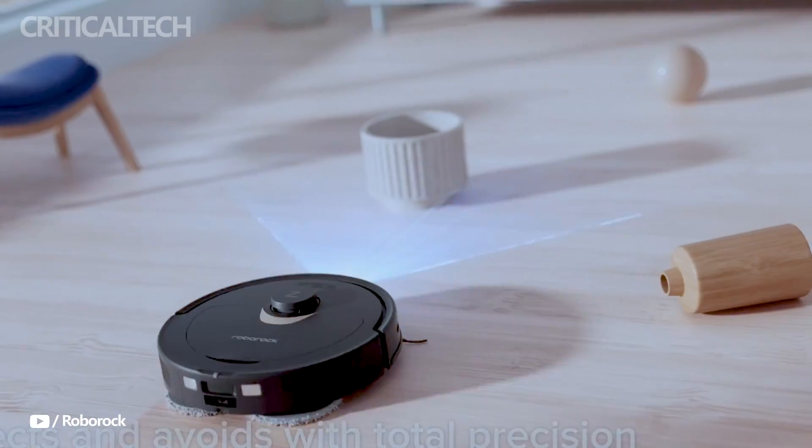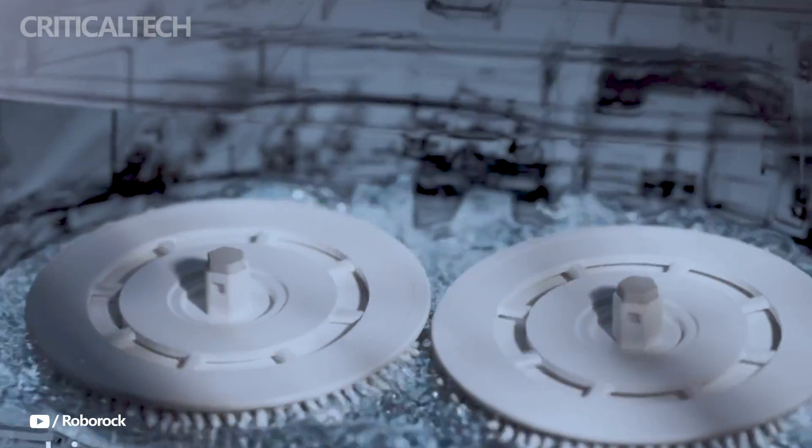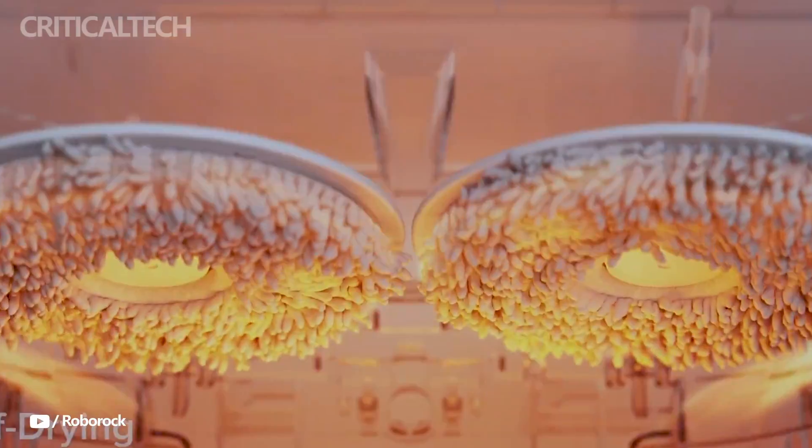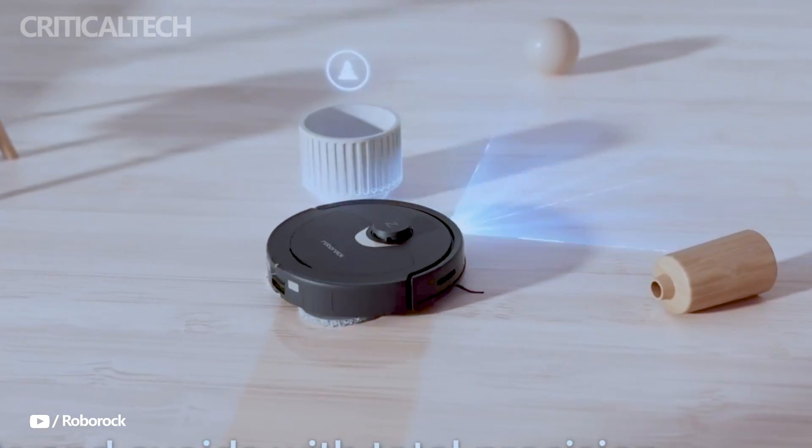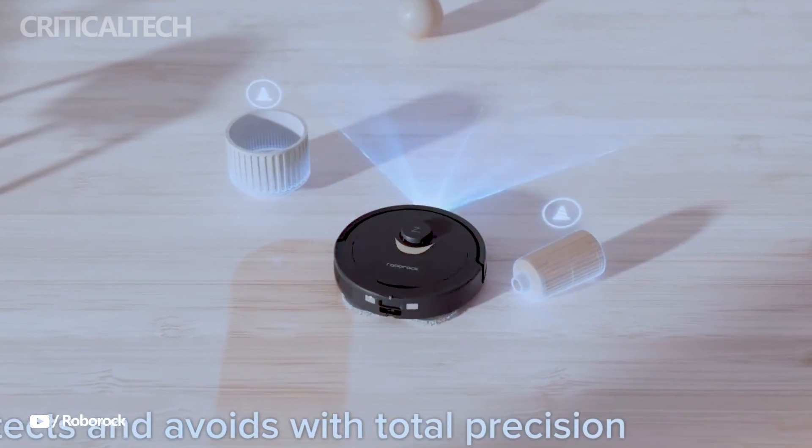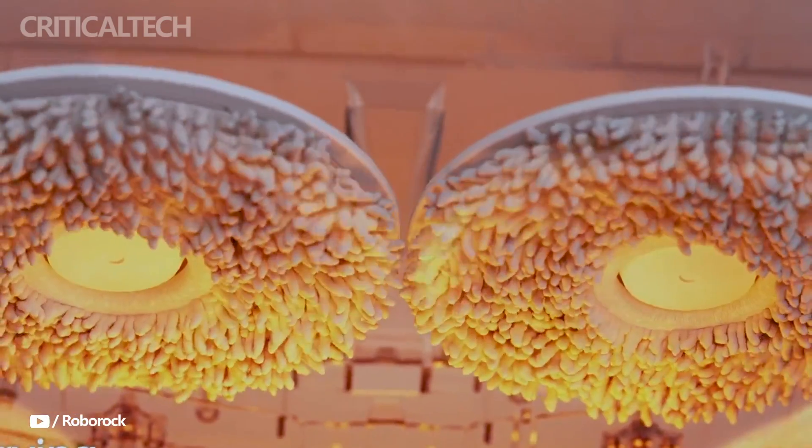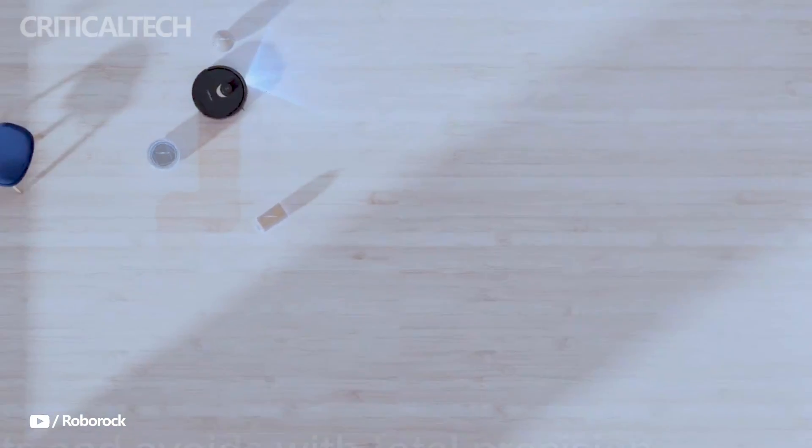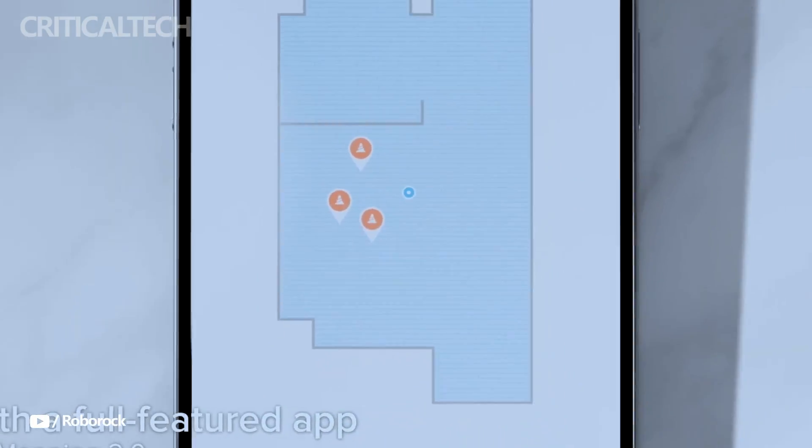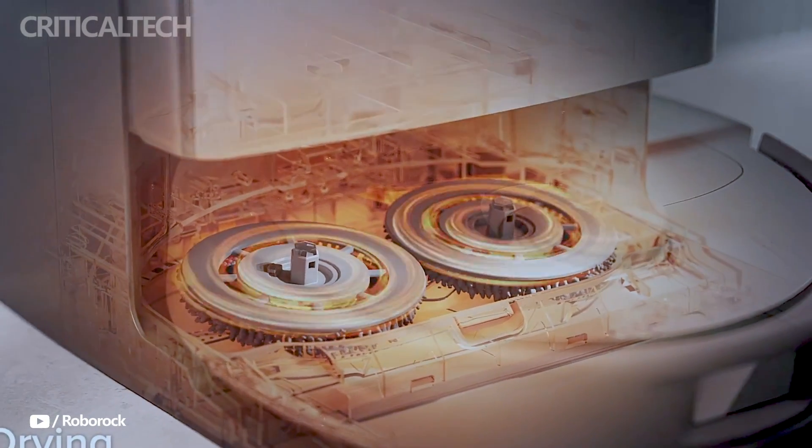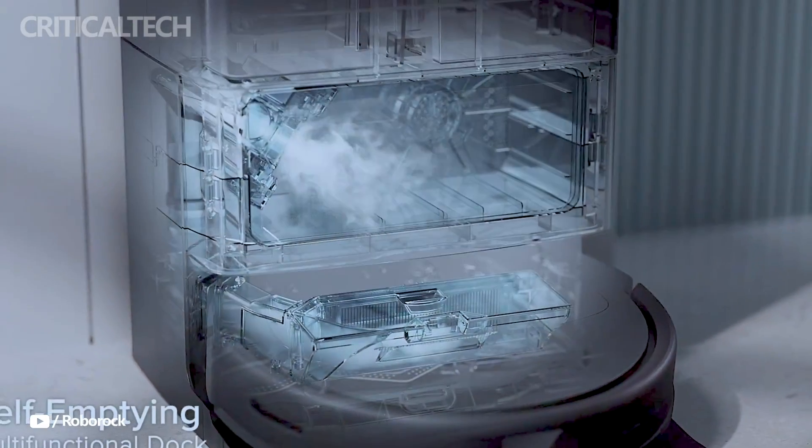The Roborock Q-Revo-S boasts several notable features, such as an automated mop fitting system, a self-cleaning docking station, and sophisticated obstacle avoidance technology. The primary rubber brush and dual spinning mops on the robot vacuum are designed to identify carpets automatically and raise, so it can clean a variety of floors with ease.